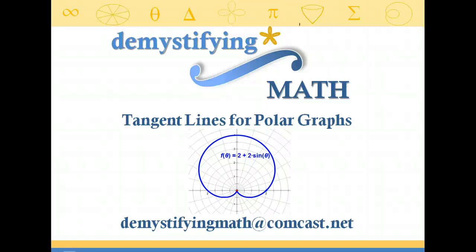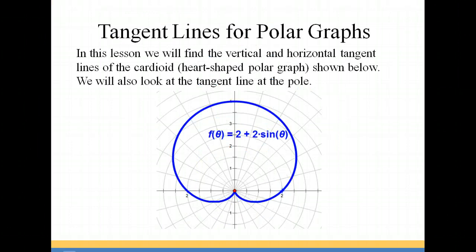Welcome to Demystifying Math. In this lesson, we're going to be looking at the tangent lines for a polar graph. Specifically, we're going to be finding the tangent lines for a cardioid given by the equation 2 plus 2 sine theta. We're going to look for the vertical and horizontal tangent lines as well as looking at the tangent line at the pole.